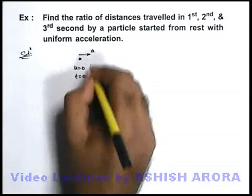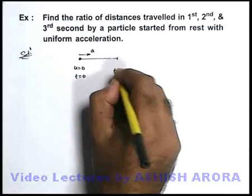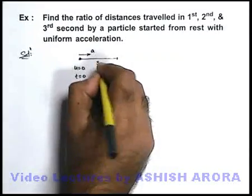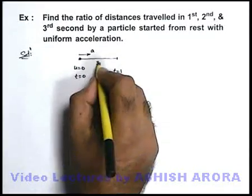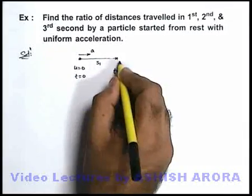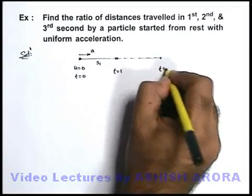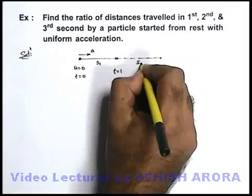If it starts at t=0, then from t=0 to t=1 it covers a distance s1. So this s1 is the distance covered by the particle in the first second of motion. And then from t=1 to t=2 whatever distance it will cover, say it is s2.